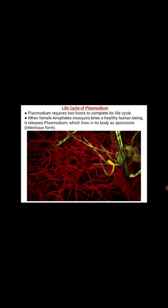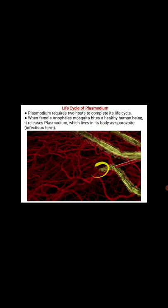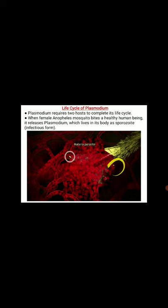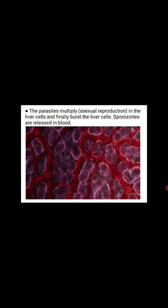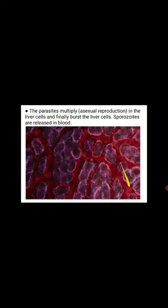Here we can observe how the malaria parasite enters the human body — here is the mouthpart of the female Anopheles mosquito, and the yellow-colored structures are the malaria parasites. The parasite then multiplies asexually in the liver cells. Here we can observe the entry of the malaria parasite — the Kupffer cells and hepatic cells are the cells of the liver. The parasite moves along with the Kupffer cells and enters the hepatic cells, which are responsible for bile secretion, while Kupffer cells fight against foreign particles.